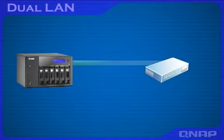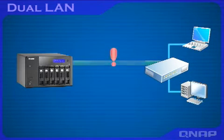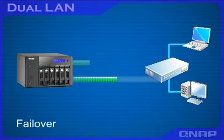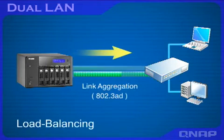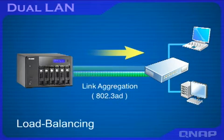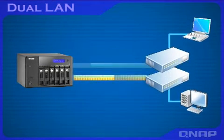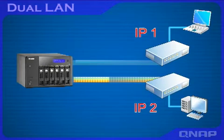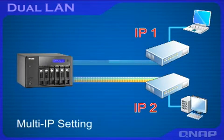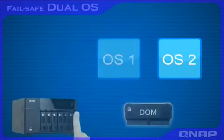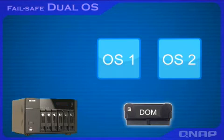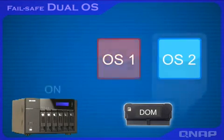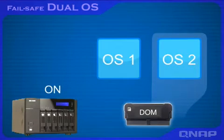The TS639 Pro provides 2 Gigabit LAN ports for different configuration options. Failover allows the NAS to sustain the failure of a network cable or network port to provide continuous service. Load balancing enables the total bandwidth of the two LAN ports to be aggregated to boost file transfer speed. You can also set up two IP addresses on the NAS for sharing among different workgroups on two subnets. Two operating system images are built in for alternative system booting; if one fails, the other will boot the NAS, and the failed OS is recovered from the healthy one.